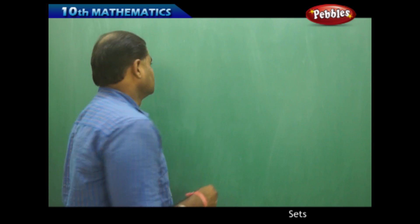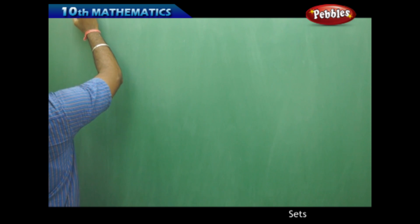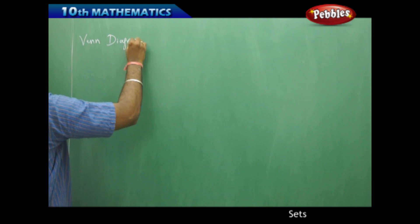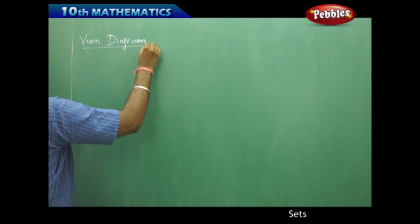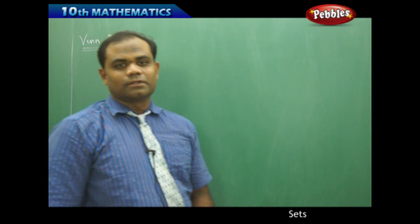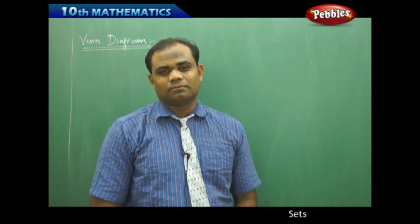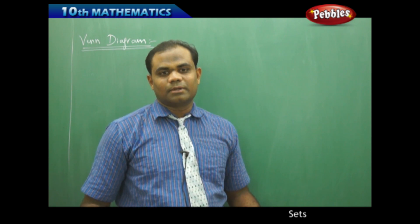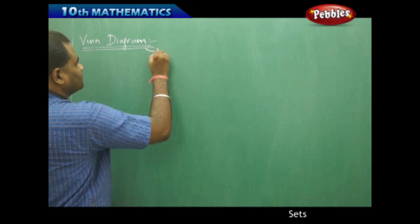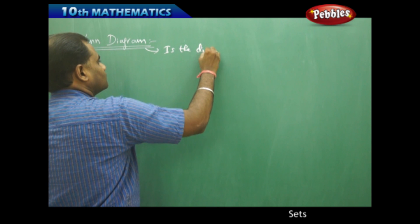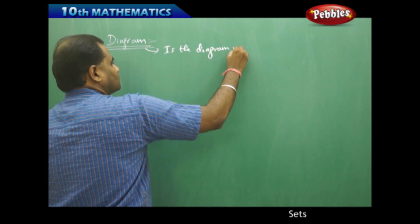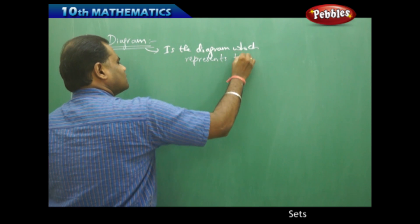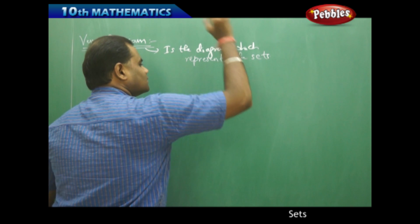So what is the Venn diagram? It is a very simple definition — the diagram which is used to denote the sets is a Venn diagram. The most simple definition: the diagram which represents the sets. So a Venn diagram is the diagram which represents the sets.